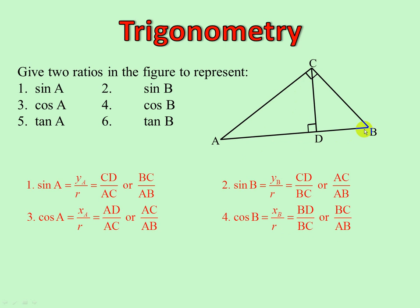Cos of B, X over R for B. In the big triangle, BC is the X, and R is the AB, so BC over AB in the big, and in the small triangle here, BD is the X, and BC is the R.